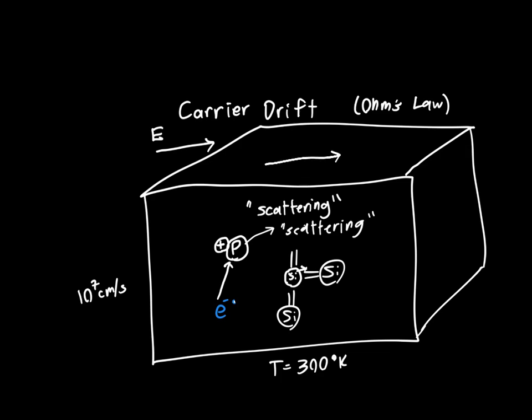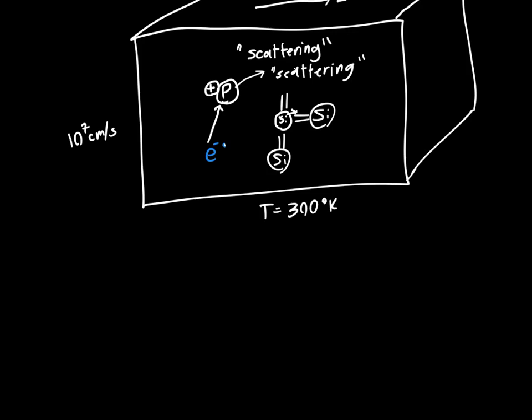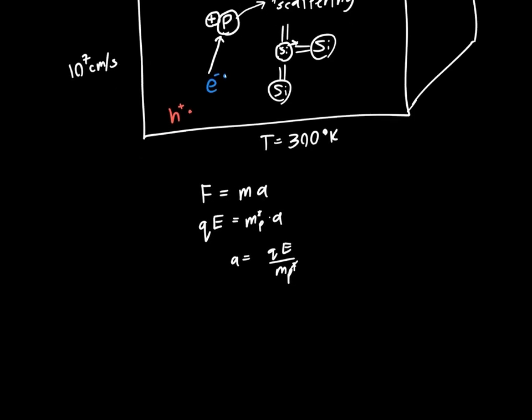We want to know how the electron responds to an external electric field. When we don't know how something responds to a force we just start with Newton's law. F equals ma, or in this case let's talk about the force on a hole instead of an electron because it's exactly the same but I won't have to deal with the negative sign. So we've got q times the electric field, which is the force on the hole, is equal to the effective mass of the hole times the acceleration, or the acceleration is equal to qE divided by the effective mass of the hole.